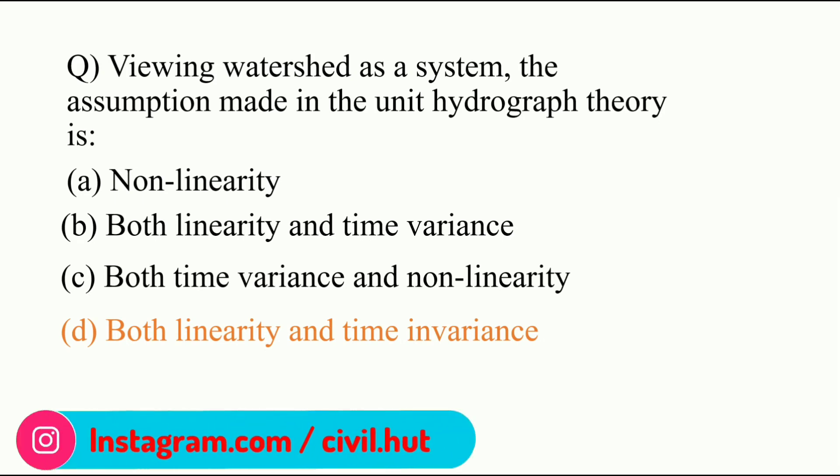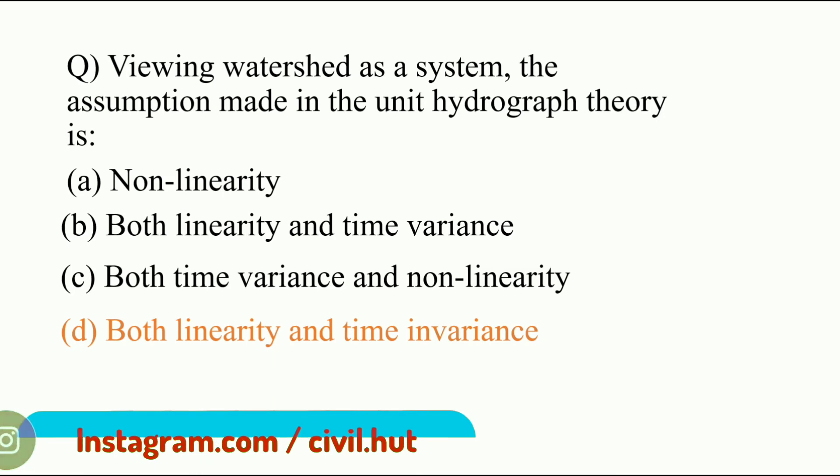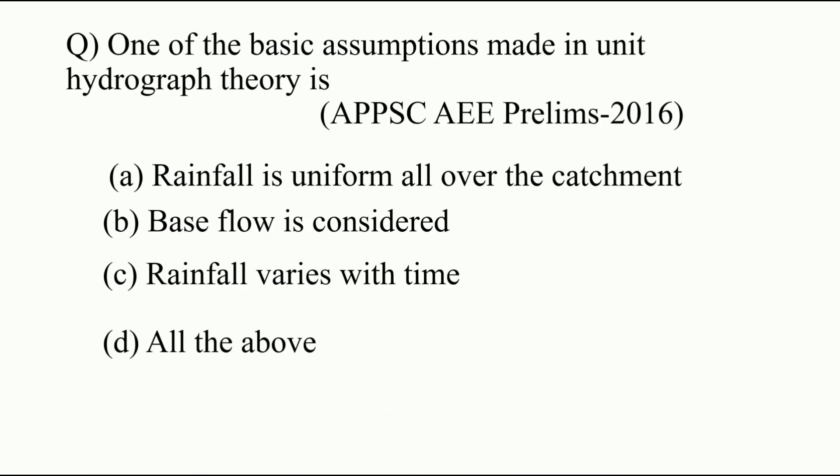Next question: one of the basic assumptions made in unit hydrograph theory is — a) rainfall is uniform all over the catchment, b) base flow is considered, c) rainfall varies with time, d) all the above. Base flow is not considered in the unit hydrograph, and rainfall should not vary with time (time invariance). So B and C are wrong. The answer is A: rainfall is uniform all over the catchment within the given duration.